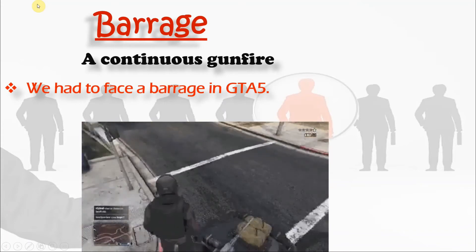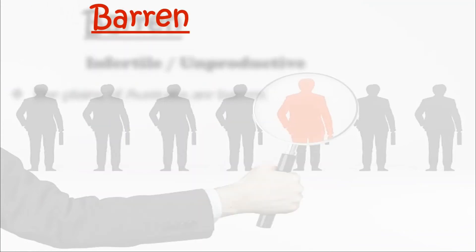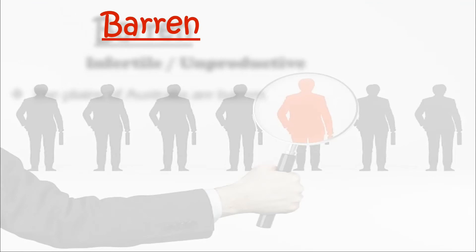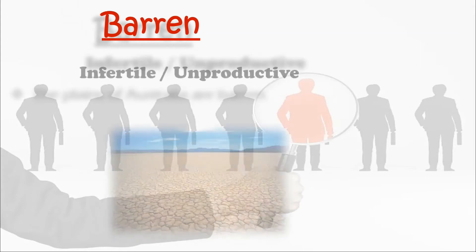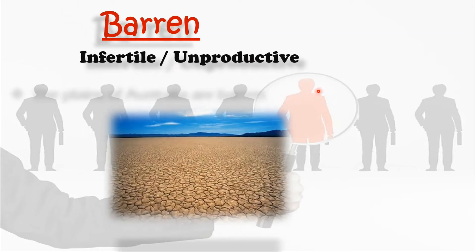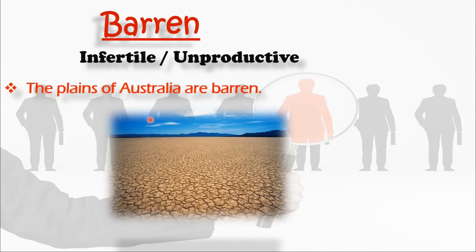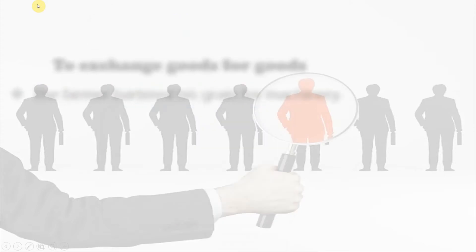The next word is barren, and it is a very common word that has been asked by many examiners. Barren means infertile and unproductive — it is a barren land. The sentence you can make: 'The plains of Australia are barren.' So barren means infertile and unproductive.